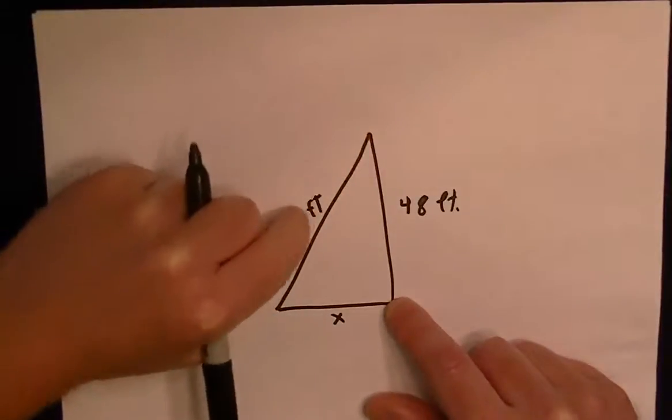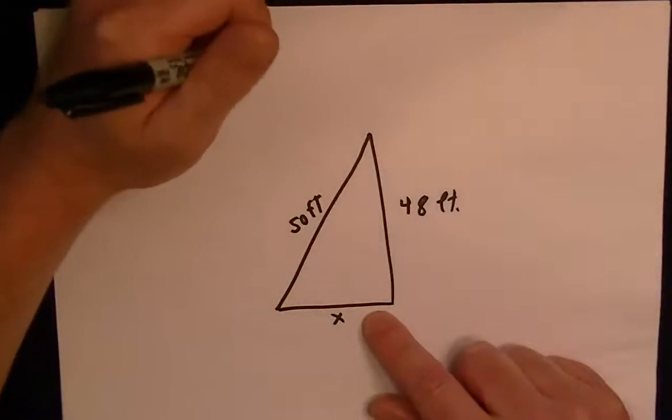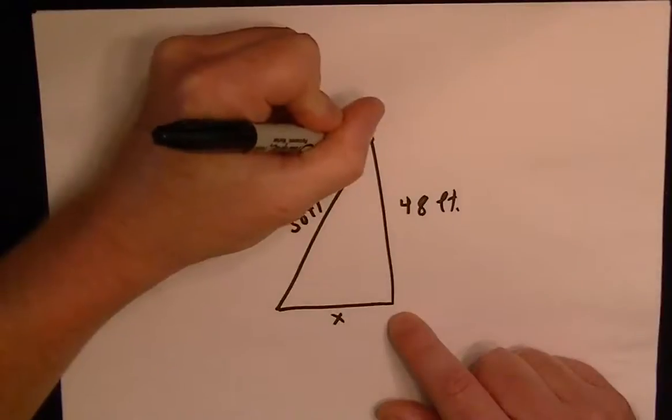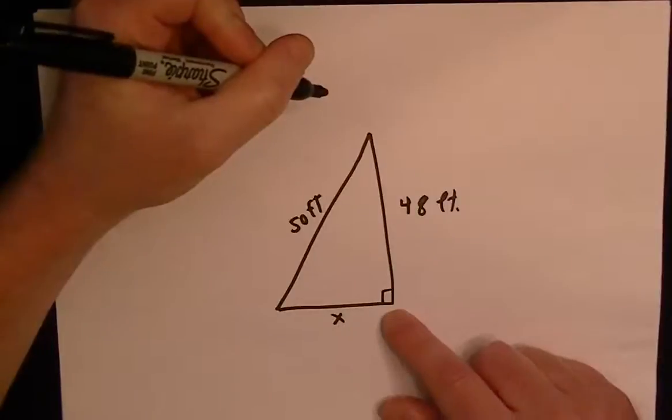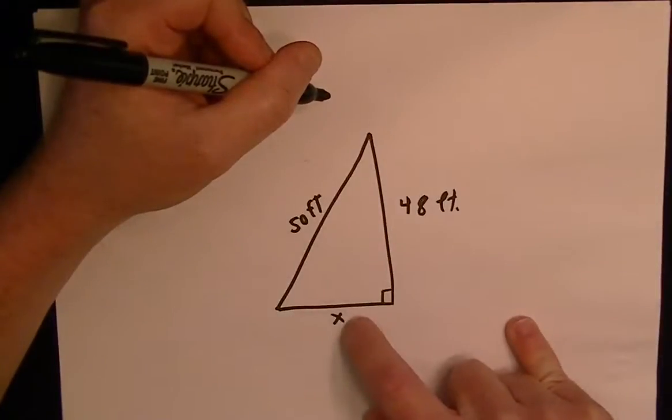Basically you've got the tower and then you've got a cable stretching out and there's a distance x here to the ground, so we've got to find that. We know that the tower is a straight-up tower, or we're assuming it is, so you could say that's a right angle. So we've got a right angle triangle here, so we can use the Pythagorean theorem to solve.